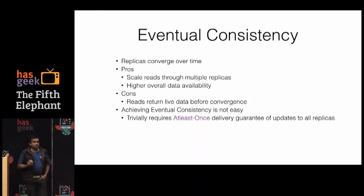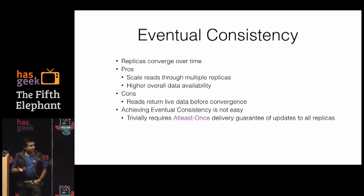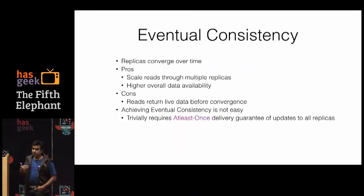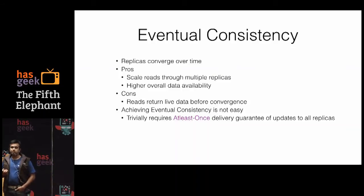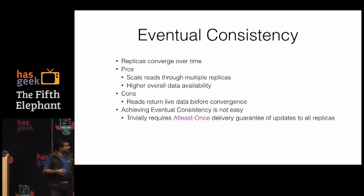Even achieving eventual consistency is not easy. It requires at-least-once delivery guarantees across all replicas. A relatively easier approach is to sequence or order the updates rather than delivering out-of-order messages. When delivering out-of-order messages, the receiving replica should exhibit commutative properties — so it doesn't matter whether you do increment-then-decrement or decrement-then-increment; you still arrive at the same value. Even just getting at-least-once delivery guarantees is not easy.